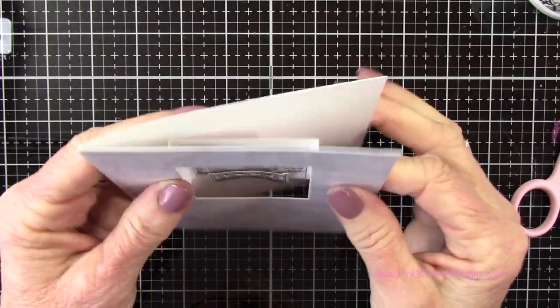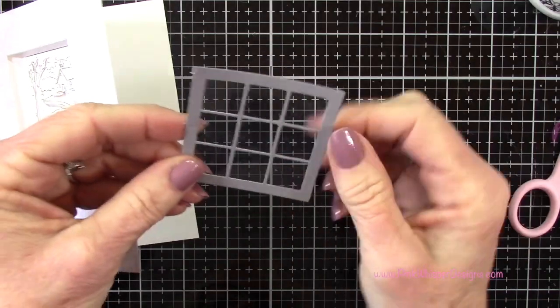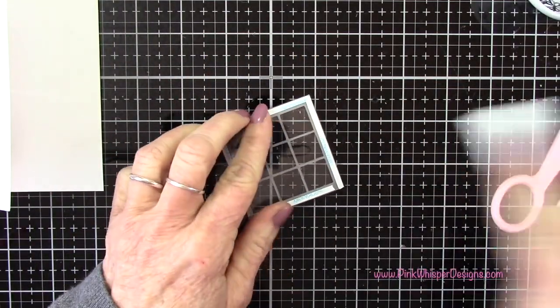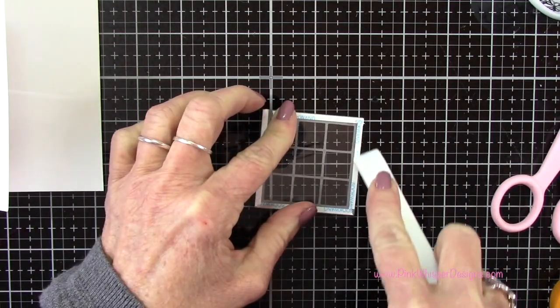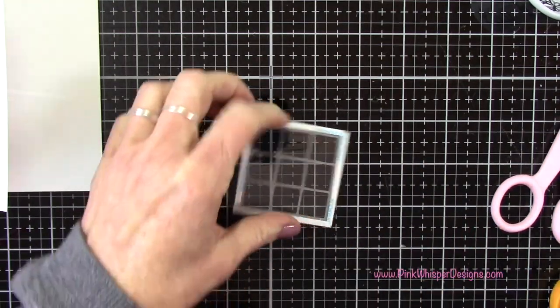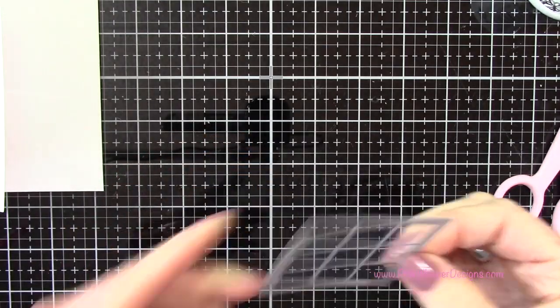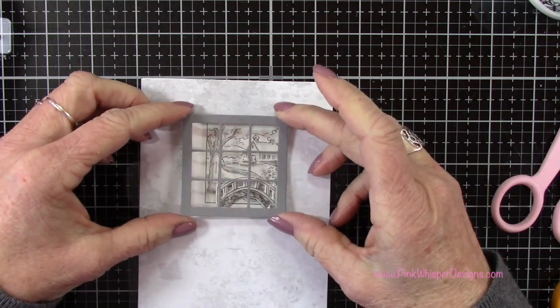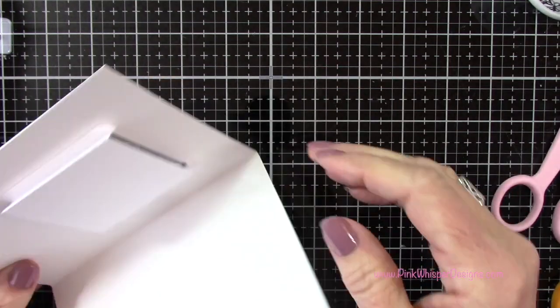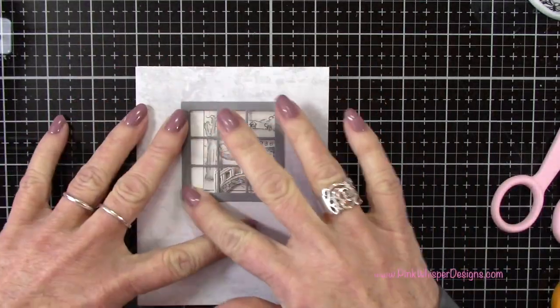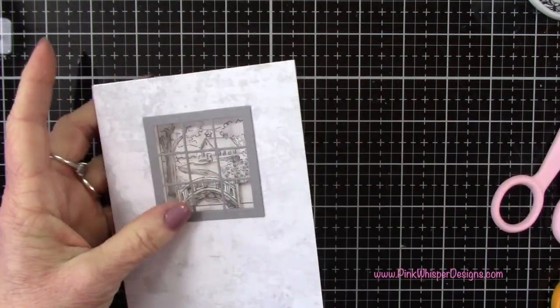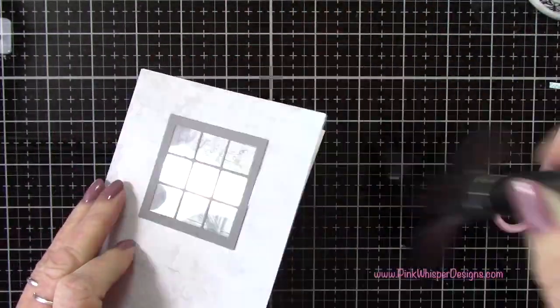Now we've got our little window and we can go ahead and attach that to the front of the card. A little trick here is just to use your bone folder to press out the backing on that score tape and then it'll come off really easily. I want to center this right over that opening. I'm just going to take a peek behind here just to make sure that looks like it's lined up properly. Then I can go ahead and press that in place. Again I'm just going back to that little surface sweep brush and just brushing away any lint there.